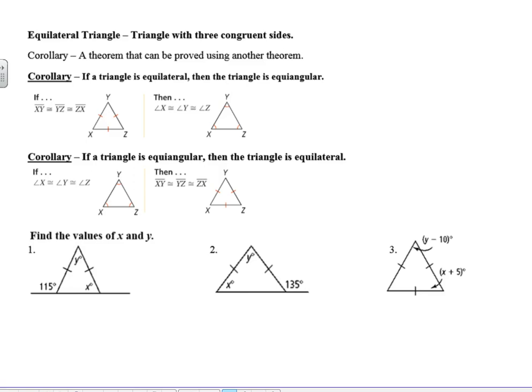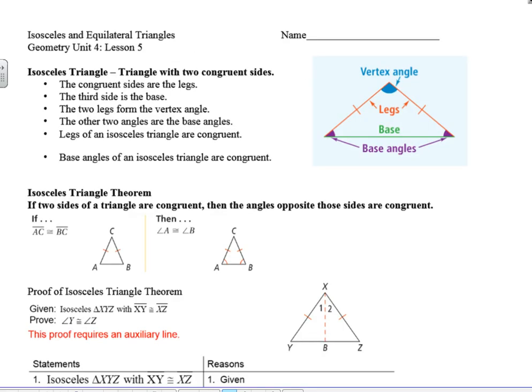Hello geometry students, Mr. Zazek back with you here in unit 4 lesson 5, rolling along talking about triangles and how we prove things in triangles. Today we're going to talk about two types of triangles called isosceles and equilateral triangles, and we're going to work on how we look at those theorems, how we prove them, how we use that information in proofs to find out things.